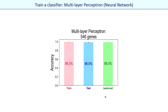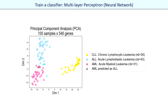Here are the results obtained with this neural network on the leukemia dataset. As with the SVM model, we correctly predict almost all samples in the leave-out dataset except one. Nevertheless, this model is preferable to the previous SVM model because the overfitting is low — the accuracies in training and test datasets are very close. The prediction still fails on the same point in the leave-out dataset, but with real-life datasets we can barely expect perfect 100% prediction in all cases, so this result is very satisfactory.